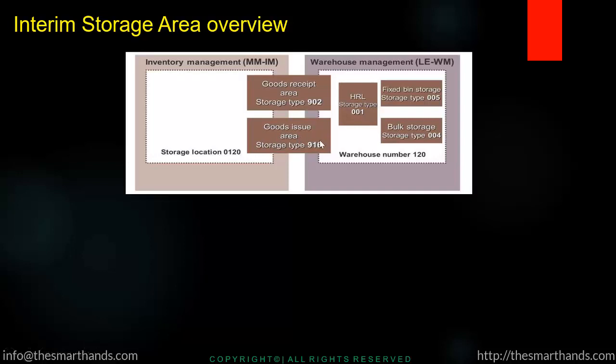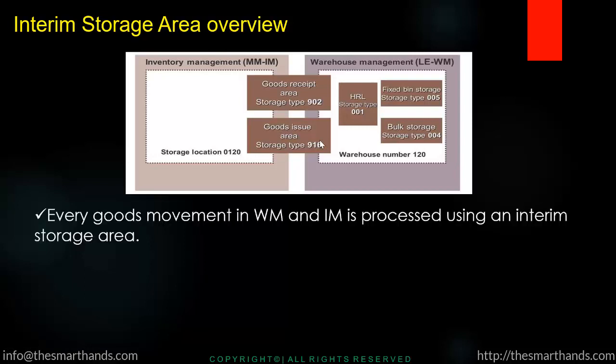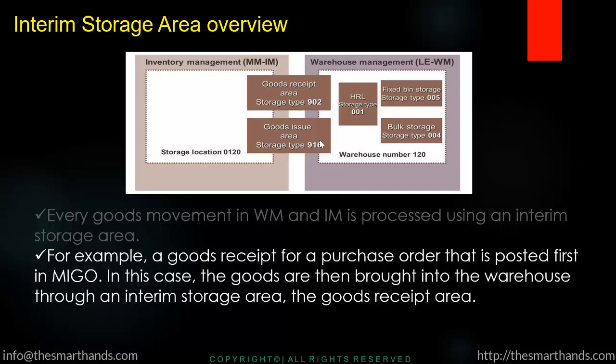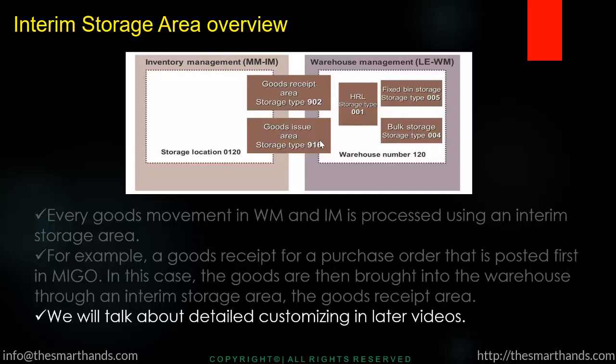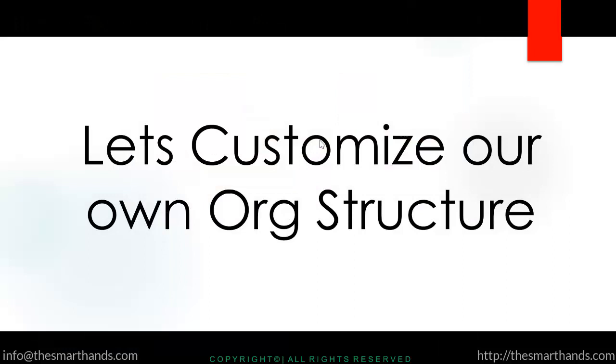Every goods movement in WM and IM is processed using the interim storage area. For example, a goods receipt for a purchase order is posted first in the goods receipt transaction, and in this case the goods are brought into the warehouse through an interim storage area — the goods receipt area. We will talk about the detailed customizing in later videos.